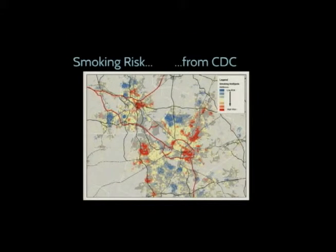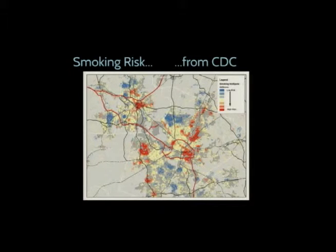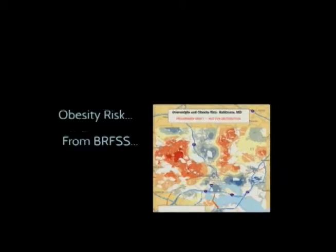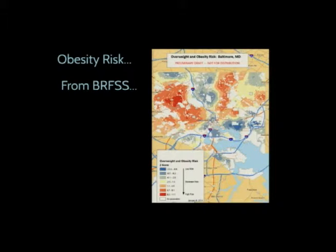The same approach applies to smoking: we take CDC survey data on who smokes by household characteristics, assign smoking probabilities to synthetic households, and do cluster analysis — red areas show higher likelihood of smoking prevalence. And for obesity: here is a preliminary cluster analysis of obesity risk in Baltimore. It's very preliminary and we haven't validated it yet, but this kind of map allows many new types of analyses.